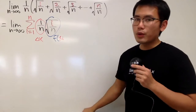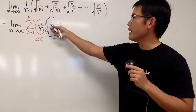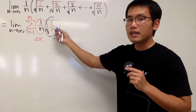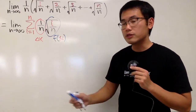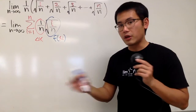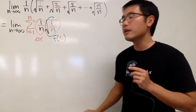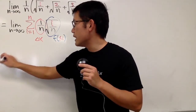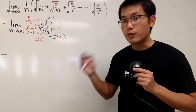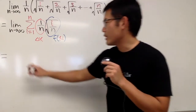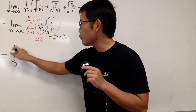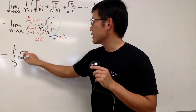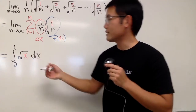And there's nothing crazy because we don't have like square root of 1 plus i over n, or square root of 2 plus i over n whatsoever. So the function is just square root of x — just start it like that — and we'll start at 0. This right here represents the area under square root of x from 0 to 1, and we can write it down as the integral from 0 to 1 of square root of x, with dx.